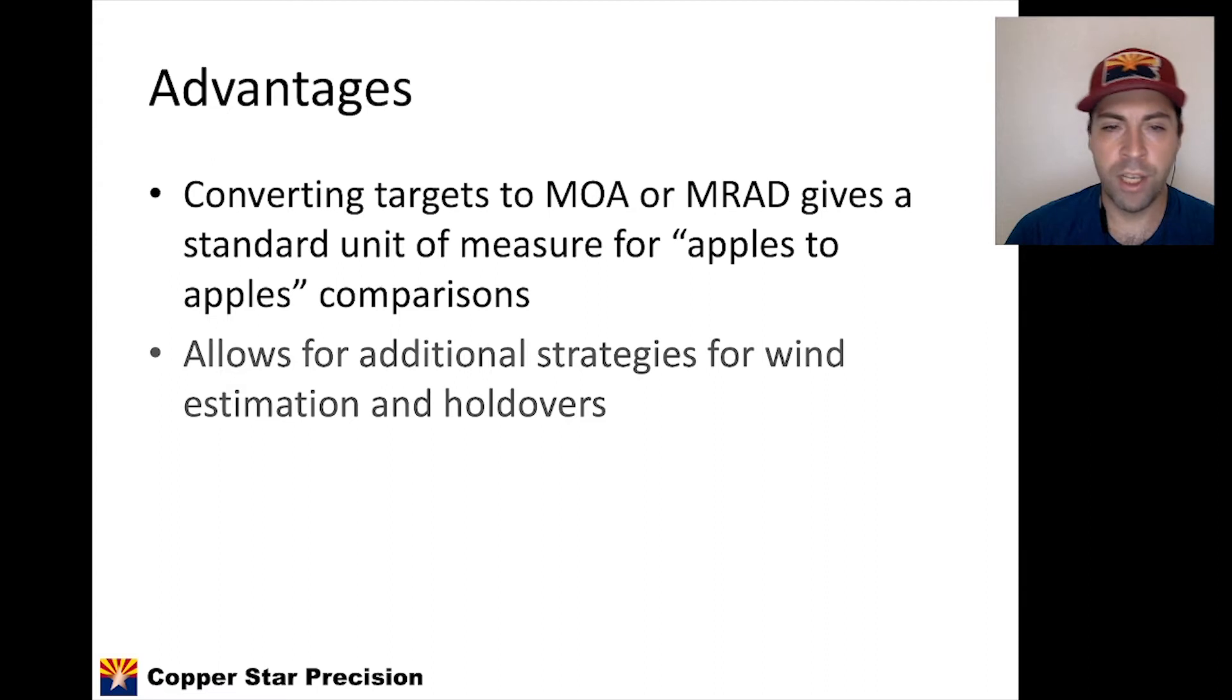Remember from the last video, we talked about MOA and mils as angular units of measure. We can use angular units of measure to look at a target to see how much of an actual angle that target subtends, and then we can make an apples to apples comparison between those two angular measurements, which will account for both target size and distance. It allows for additional strategies for wind estimation and holdovers, and also a huge advantage to scoring more impacts on targets.